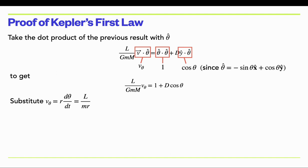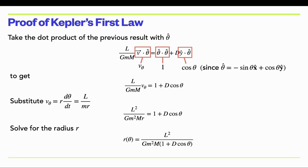We substitute v_θ, getting rid of it in terms of angular momentum. Since v_θ = r dθ/dt = l/(mr), we get an l² and m² in the expression with an r on the bottom. We're almost there — we can now solve for the radius r in terms of everything else. Cross-multiplying by r and dividing through by 1 + d cos θ gives r as a function of θ.